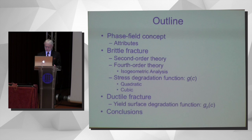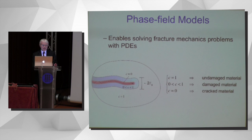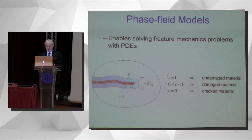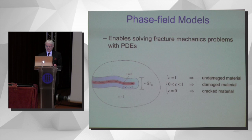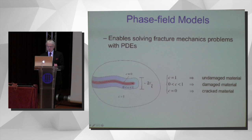A phase field model is one that allows you to do fracture mechanics problems purely with partial differential equations — no bells, no whistles, no special descriptions. You generate PDEs, solve them, and that describes the fracture process completely. The phase field is essentially the marker of damaged and undamaged material. C equals 1 indicates no damage; C equals 0 indicates completely failed material. There's a transition zone, and the phase field is defined over a process zone with characteristic dimension L0 — a smooth field that is the signature of the entire fracture process.